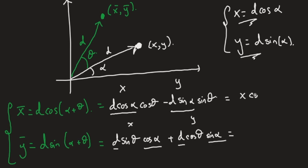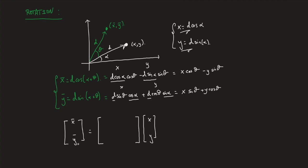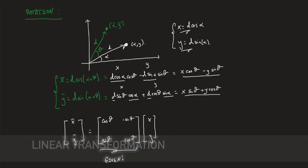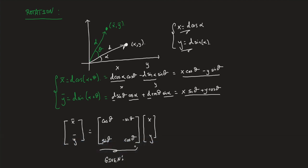So we can write x̄ as x·cosine(theta) minus y·sine(theta), and ȳ as x·sine(theta) plus y·cosine(theta). The vector [x̄, ȳ] can be expressed as a linear transformation: the 2×2 matrix with [cosine(theta), −sine(theta); sine(theta), cosine(theta)] multiplied by the 2×1 vector [x, y]. This matrix is well known — it is referred to as the Givens matrix. One might wonder: could this be done in higher dimensions, 3×3, 4×4, n×n? Well, yes.